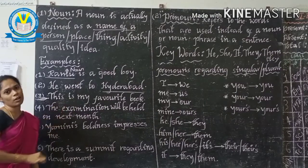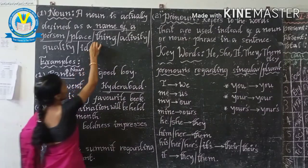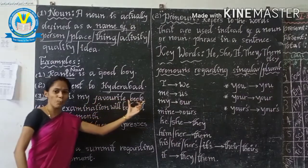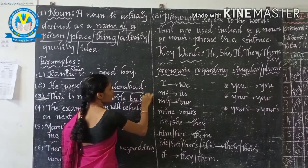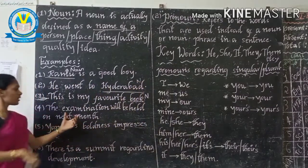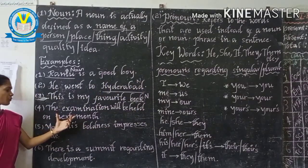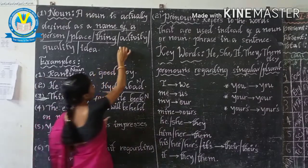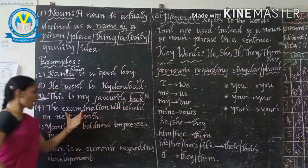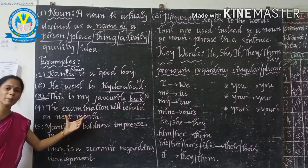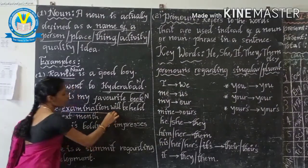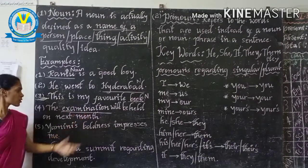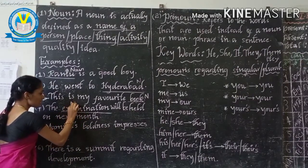'This is my favorite book.' The third category is thing. What is the thing here? Book. So, book is the noun. Next: 'The examination will be held on the next date.' The fourth category is activity. Which activity is taking place here? Examination. Examination is an activity. So, here examination is the noun.